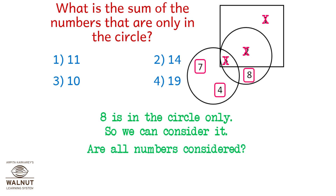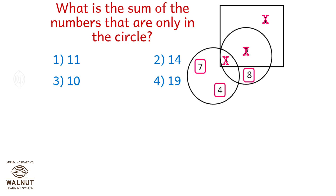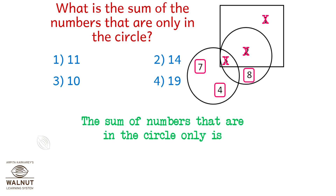Are all the numbers considered? Yes. So let's add the ones that are only in the circle. The sum of the numbers that are in the circle only is 7 plus 4 plus 8, which is 19 — which is the fourth option.